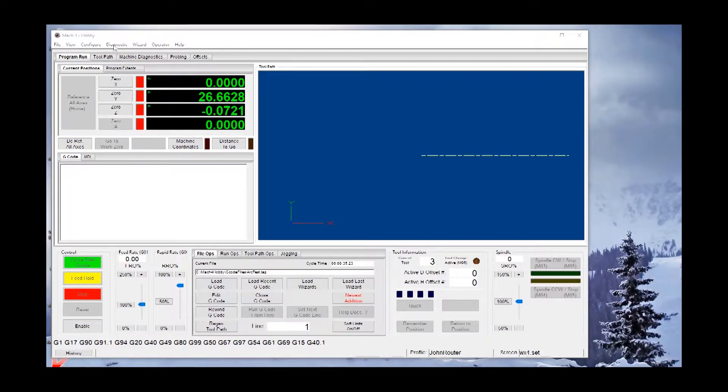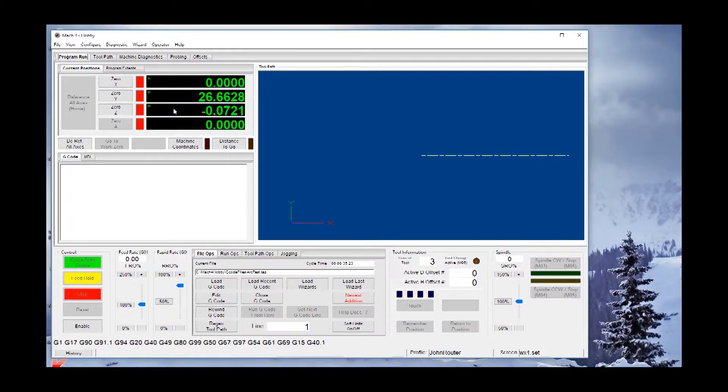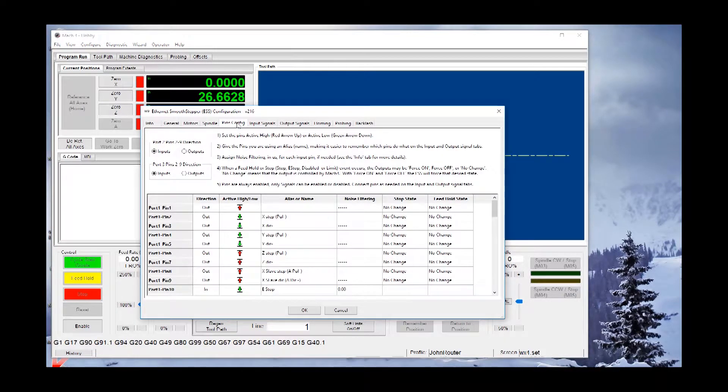I've got Mach 4 running here on my computer, and I'm going to go to the configuration tab to my plug-in. Remember, I used the ESS or the Smooth Stepper from Warp 9, and I go to my pin labeling. You can see how I've labeled each one of my pins. I give them all different names so it's easier to remember and it's easily identifiable in this configuration.